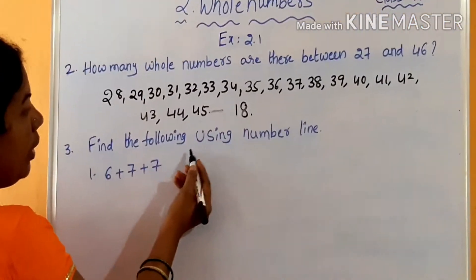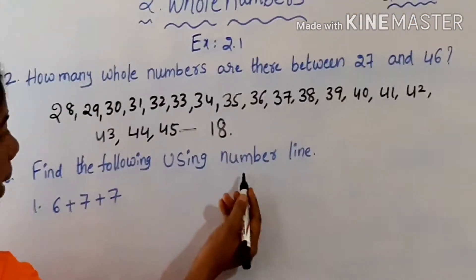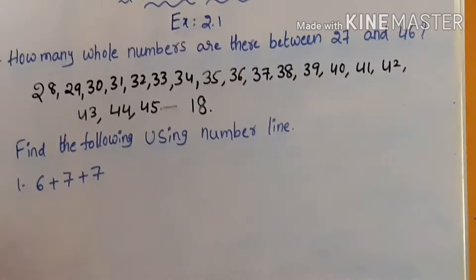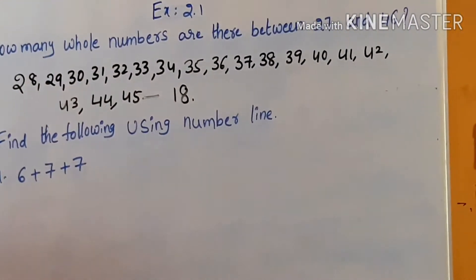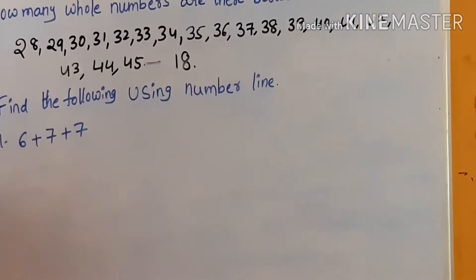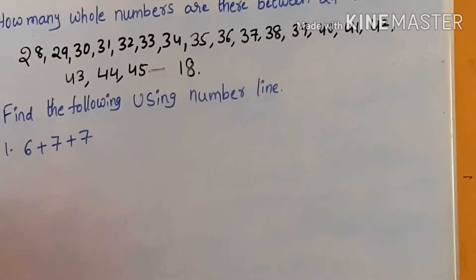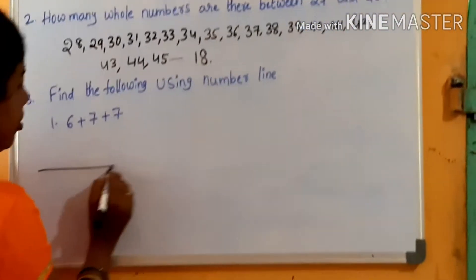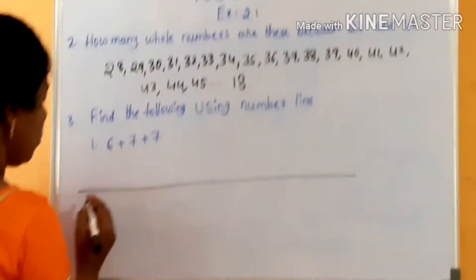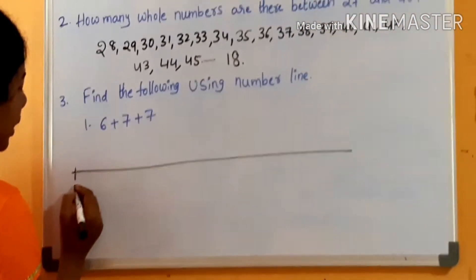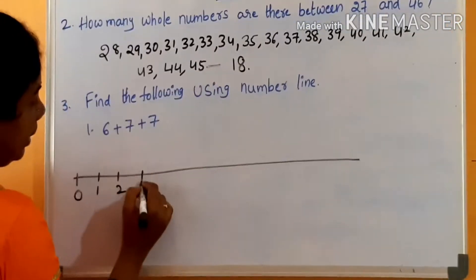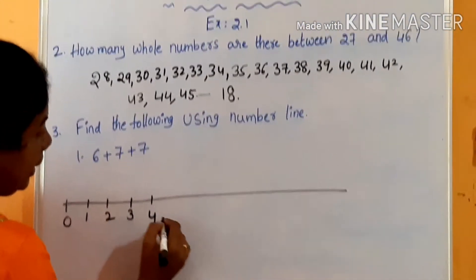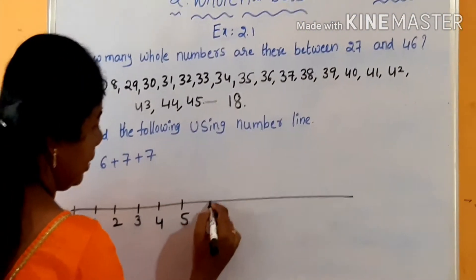Next, find the following using number line. Before class we already discussed how to add whole numbers using number line. First, we draw a straight line and mark a point 0, then write numbers at equal distances.